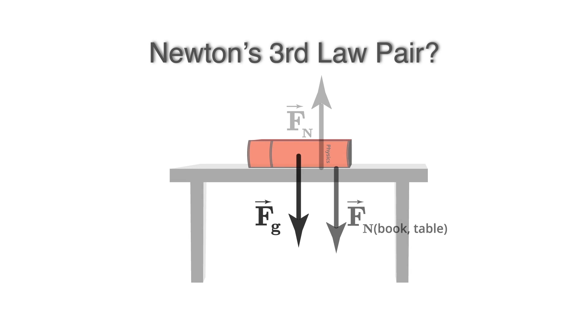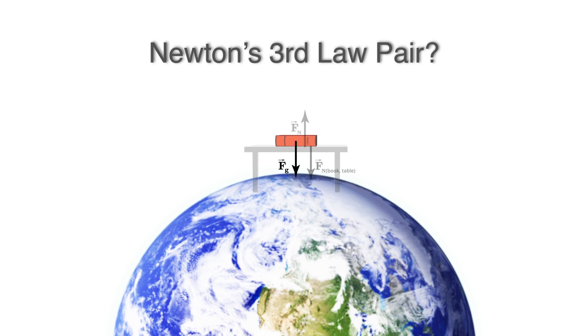What's the Newton's Third Law pair of the gravitational force on the book? Well, because the gravitational force arises from the interaction between the book and the Earth, the other force in the Newton's Third Law pair is actually the force that the book exerts on the Earth.